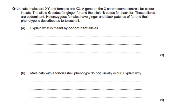Now let's move on to some exam questions. In cats, males are XY and females are XX, similar to humans. A gene on the X chromosome controls fur colour. The allele G codes for ginger fur and the allele B codes for black fur. These alleles are codominant. Heterozygous females have ginger and black patches of fur — their phenotype is described as tortoiseshell. Note that these questions overlap a lot with the inheritance chapter.